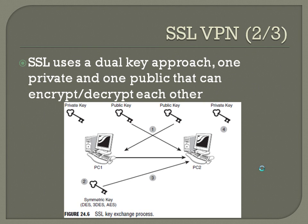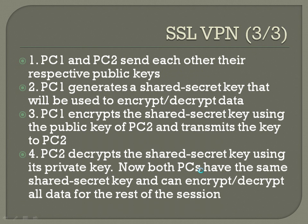SSL uses a dual-key approach — one private and one public — that can encrypt and decrypt each other. In this diagram, we've got PC1 and PC2 on each side. It can work in either direction, but we'll start with PC1 as the initiator. PC1 and PC2 send each other their respective public keys — it's a public key, so it's no issue. PC1 generates a shared secret key that will be used to decrypt data. PC1 then encrypts that shared secret key using PC2's public key and transmits it across. PC2 receives it, decrypts the shared secret key using its private key, and now both PCs have the same shared secret key and can decrypt all data for the rest of the session.